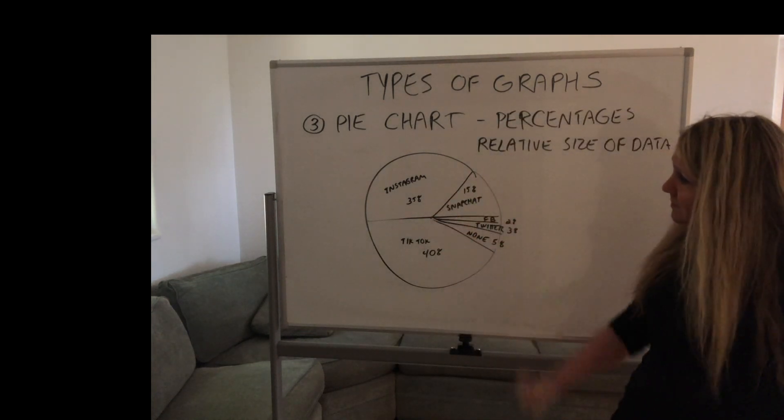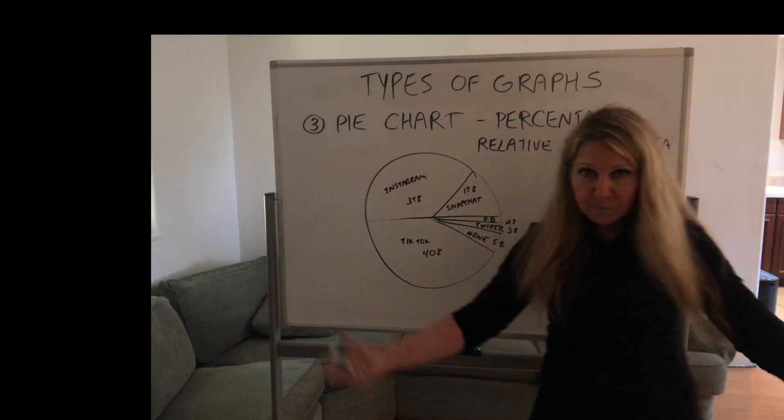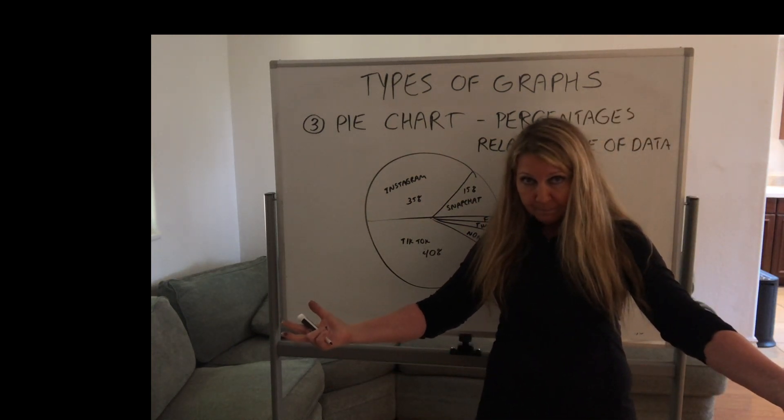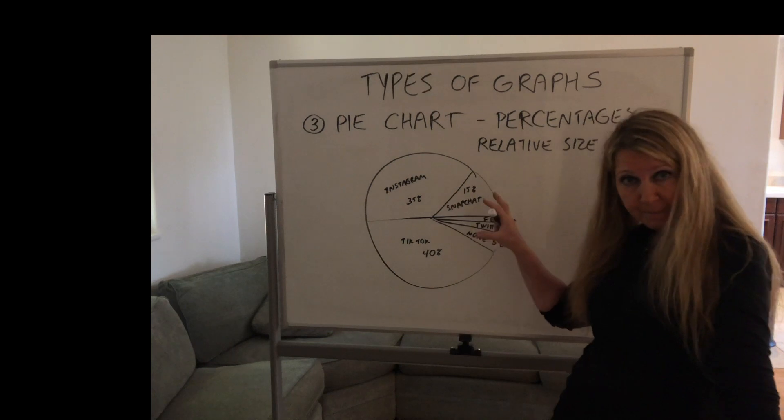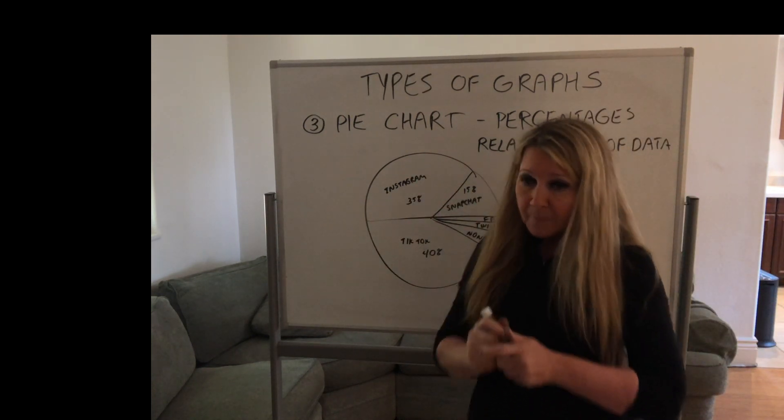Okay, now looking at this, I can tell right away that TikTok is the most popular, let's say, for example. Very easy to read the data versus having a bunch of numbers and it can be very confusing. Okay, fourth type of graph.